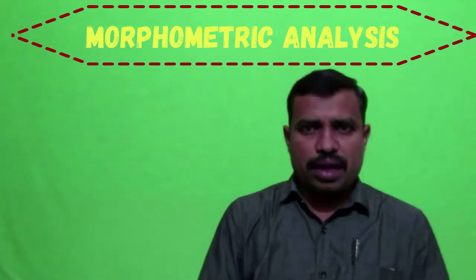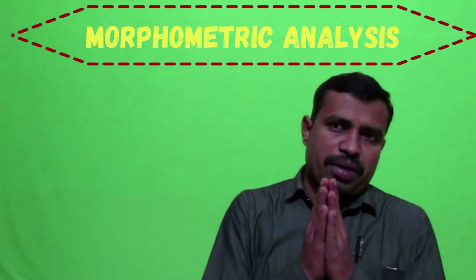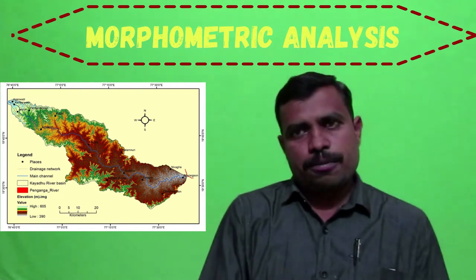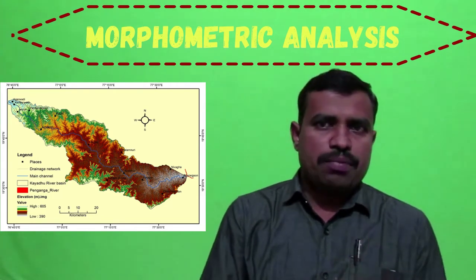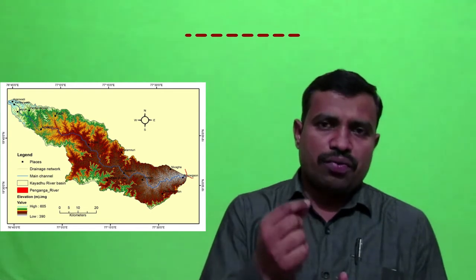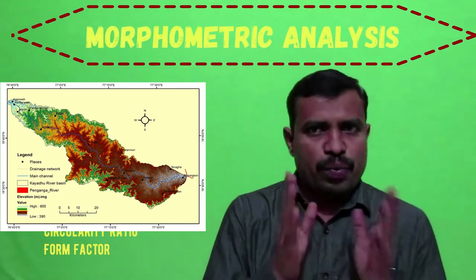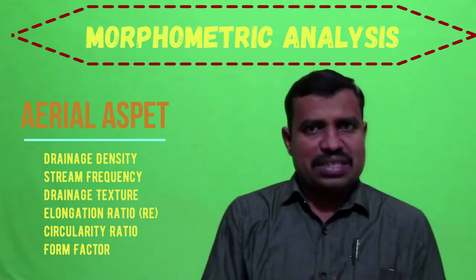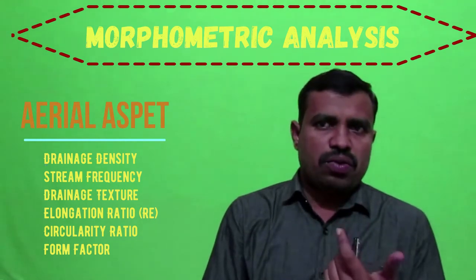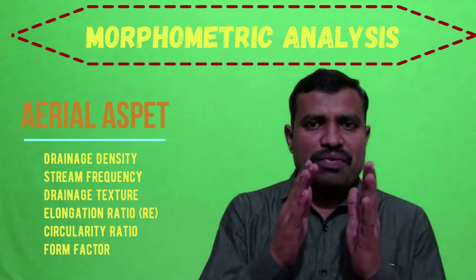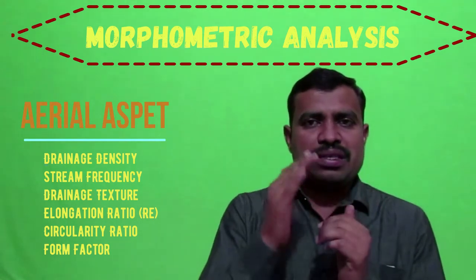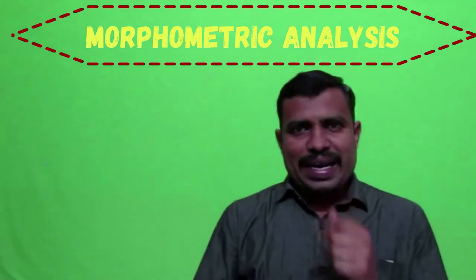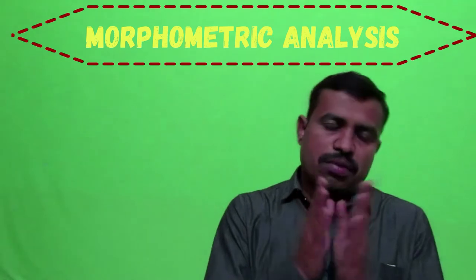The aerial aspects are two-dimensional properties of a basin. It is possible to delineate the area of a basin that contributes water to each stream segment. The total area of the Kayadur basin is 2,128 square kilometers. Aerial aspect parameters include drainage density, stream frequency, drainage texture, elongation ratio, circulatory ratio, and form factor.